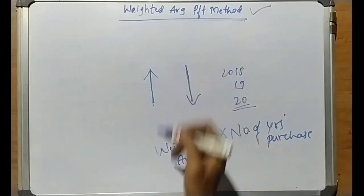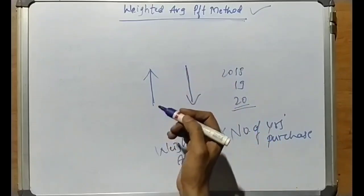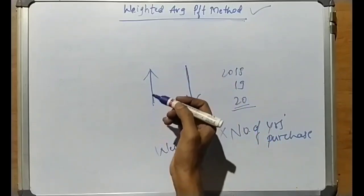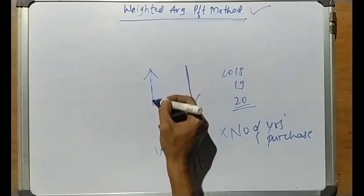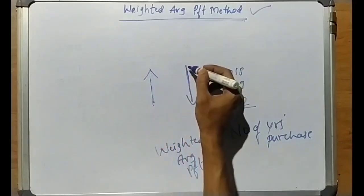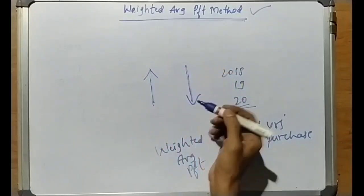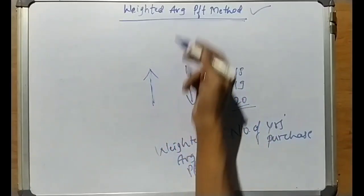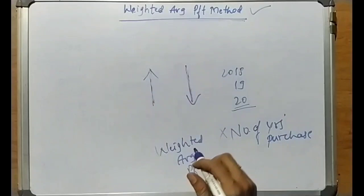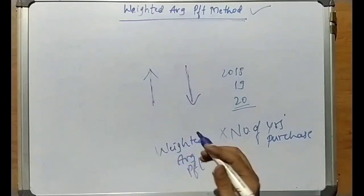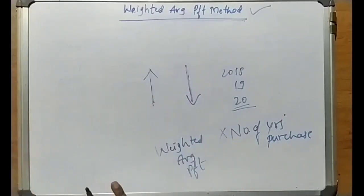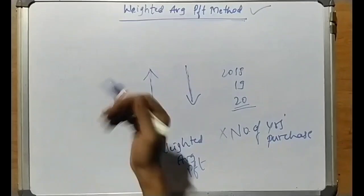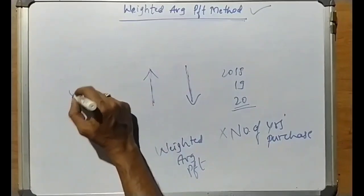When profits are continuously increasing or continuously decreasing in trend, we use the Weighted Average Profit Method. If we were to use the Simple Average Profit Method, it would not account properly for the trend because profits fluctuate. So the Weighted Average Profit Method is the appropriate choice here.